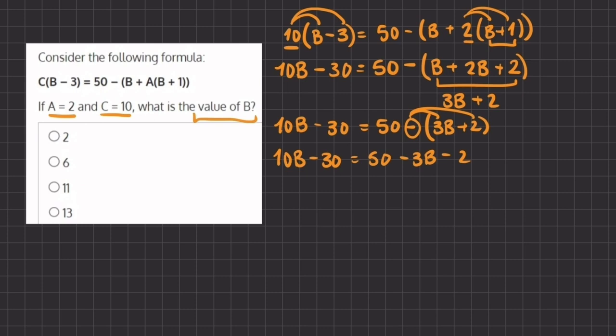Alright, so now let's move all the b's to one side, and all the numbers to the other. So we'll add 3b to both sides. This will cancel out, and here, we are left with 13b, and we will add 30 to both sides.